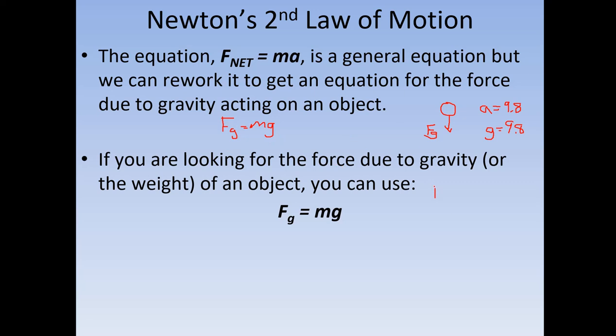Again, Fg, m, and g stands for the force due to gravity, or also called the weight of the object, measured in newtons. M is the mass, measured in kilograms. And g is the acceleration due to gravity, or the gravitational field strength. It's either 9.8 meters per second squared on Earth, or you might see the unit more often looking like newtons per kilogram. But it's the same thing.